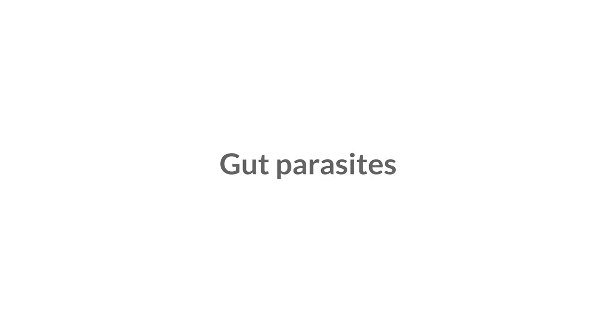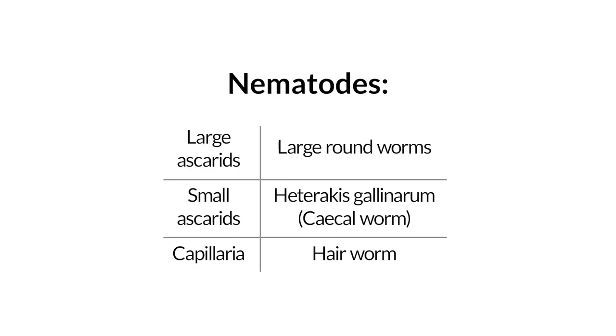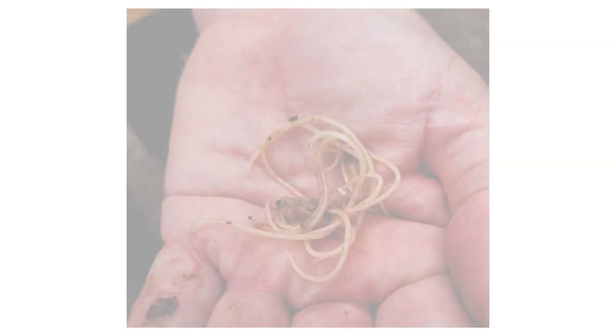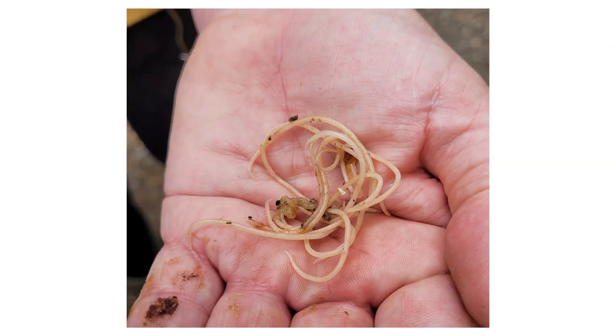There are several gut parasites we're concerned about with chickens. These are nematodes, so large roundworms, ascarids. These may be found in faeces. Generally they don't cause too many problems, but in large numbers they may cause a blockage.